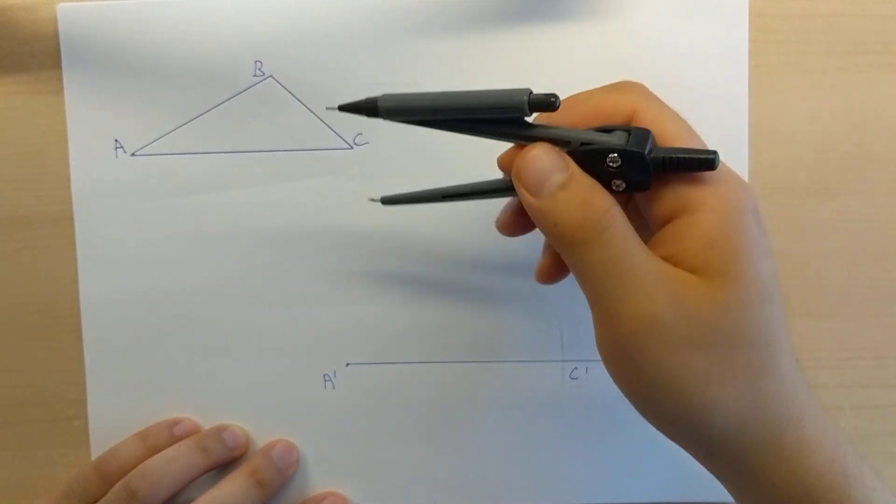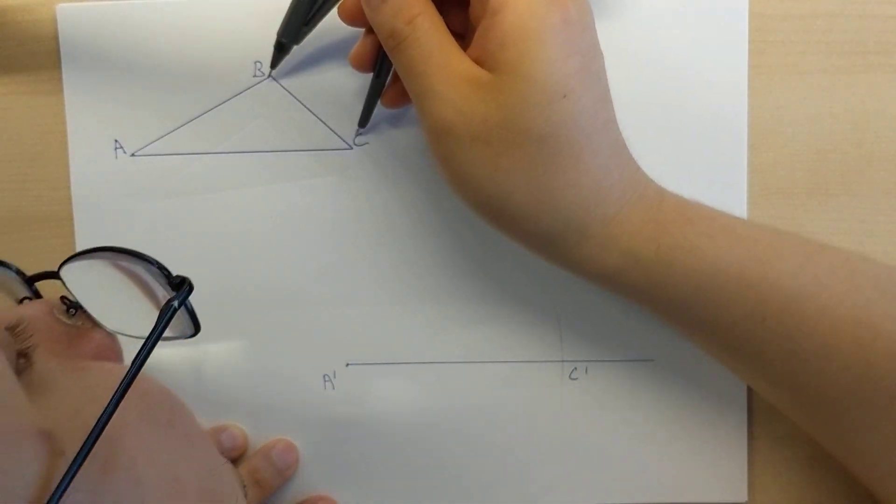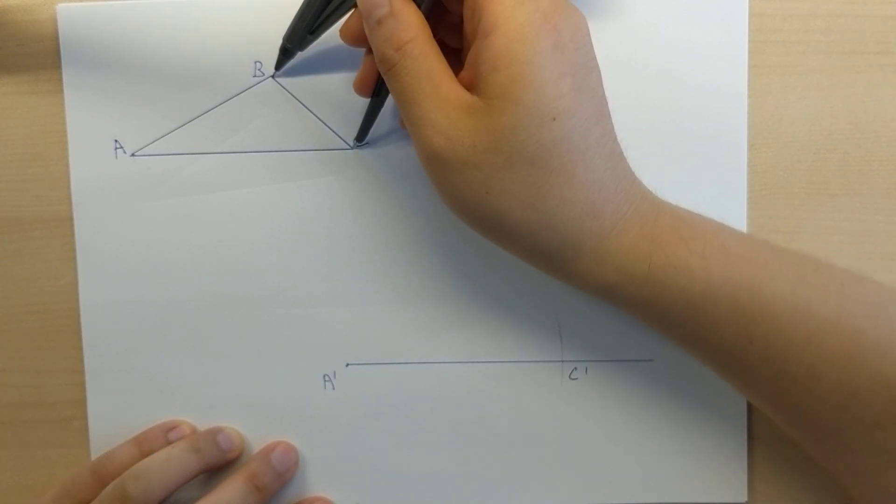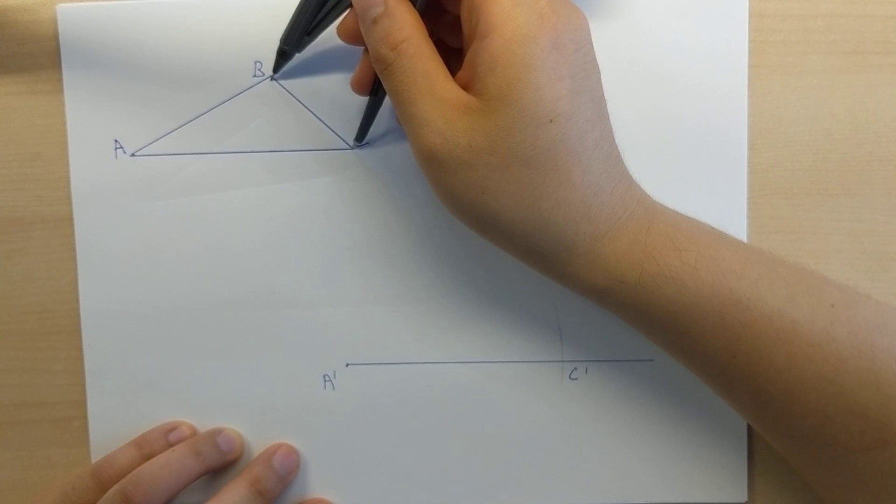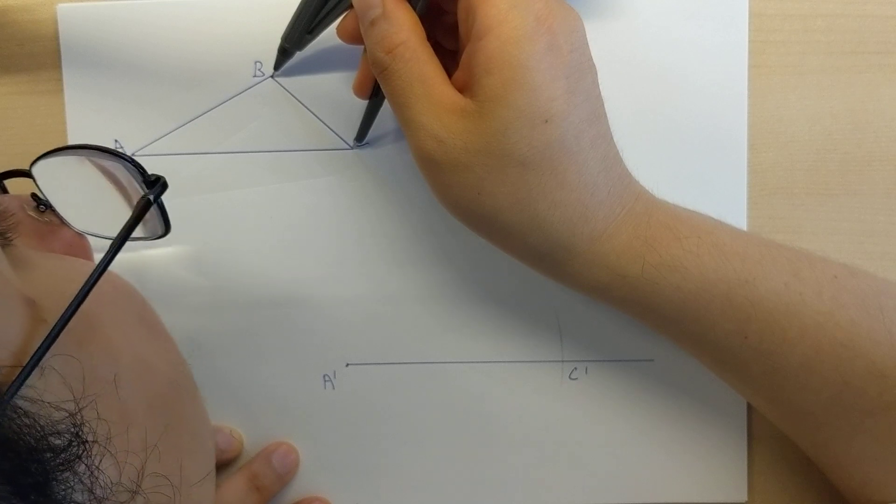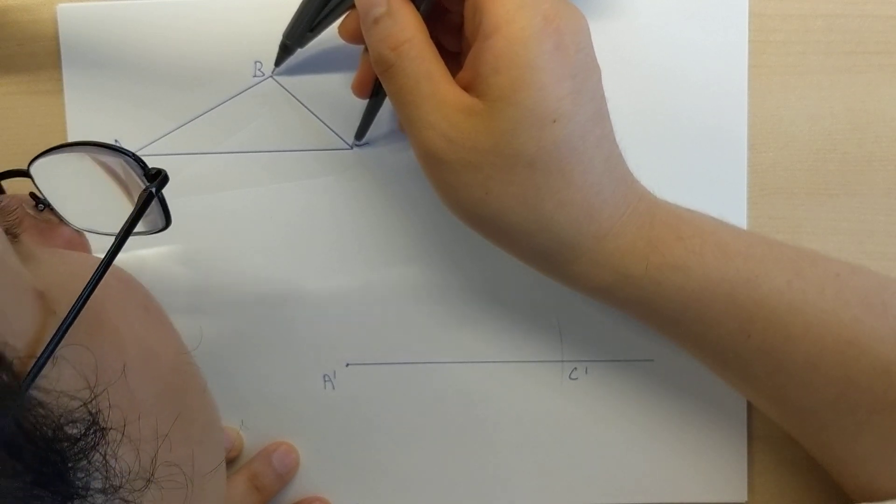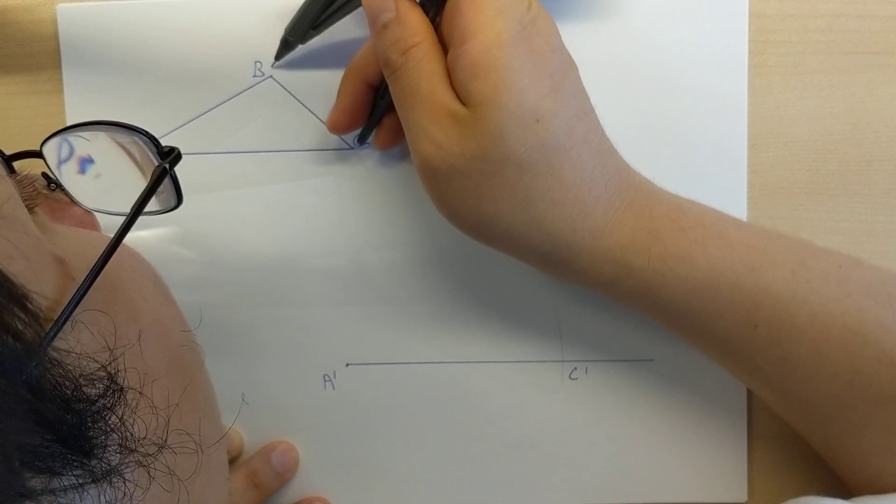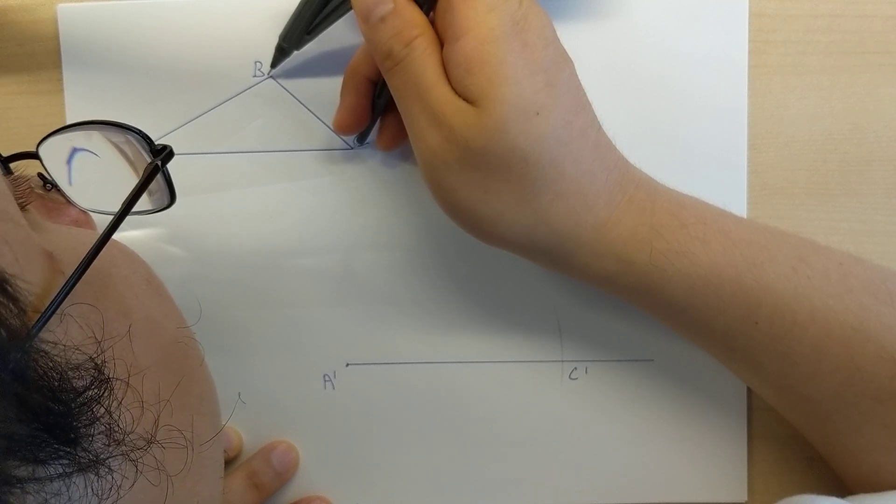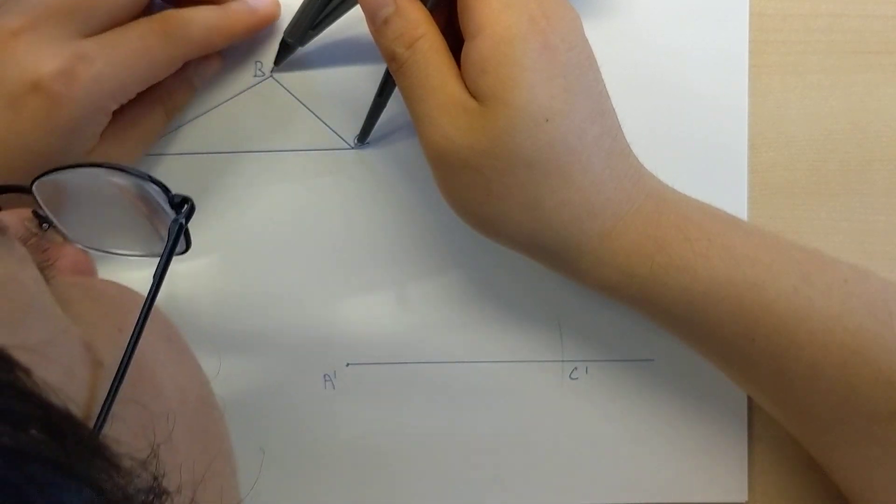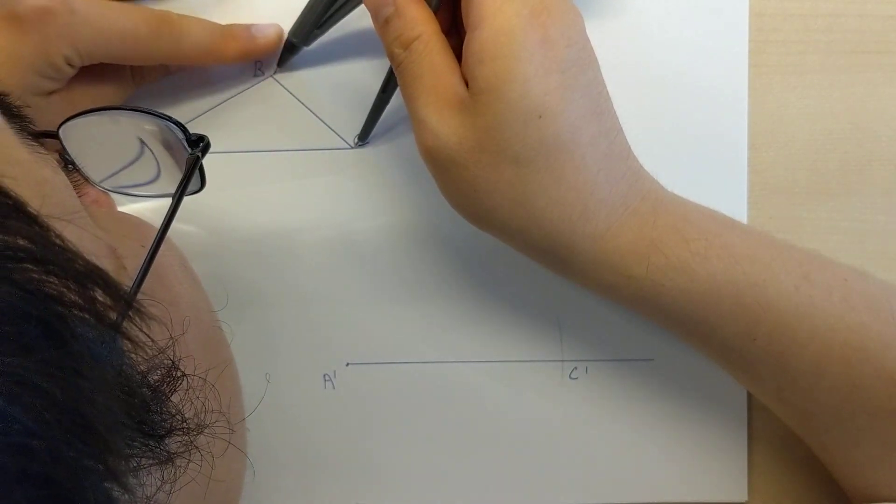So, the length of BC is this guy right here. I take my compass, I place my pin on C, and my lead on B. I open up the compass to that setting, and what I've done now is I've opened up the compass so that it's to the opening of BC. And I'm going to do this a little more accurately because I just opened by accident. Here we go. So, this length right now is the length of BC.